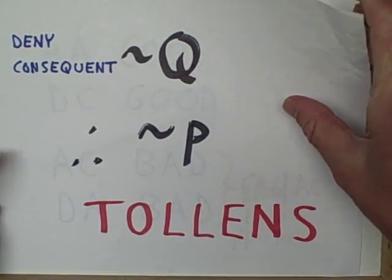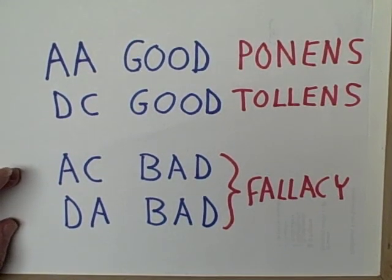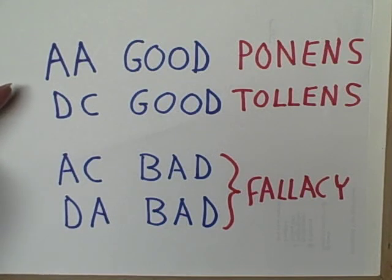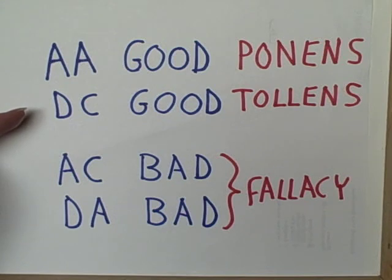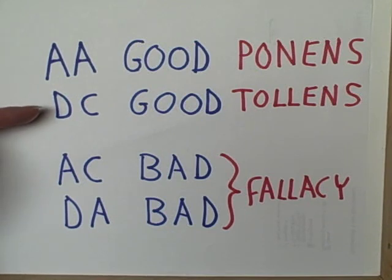Here's one way to remember what we can do and what we cannot do with conditional claims. Affirming the antecedent is all right — that's the modus ponens. Denying the consequent is all right — that's the modus tollens. So remember: AA good, DC good. Try remembering this sentence: if you're an alcoholic in the District of Columbia, it's good to go to an AA meeting.